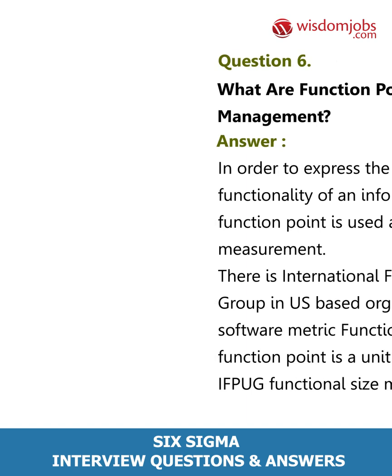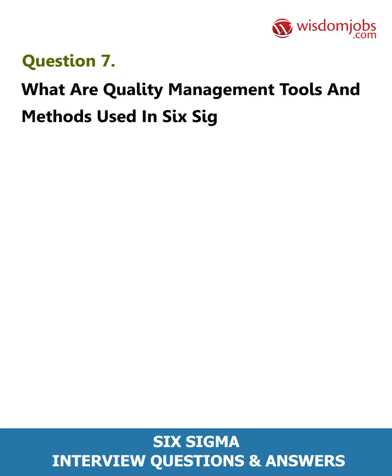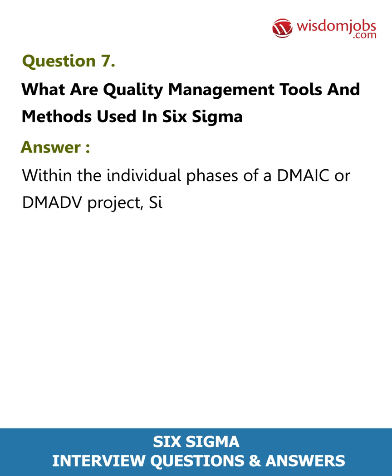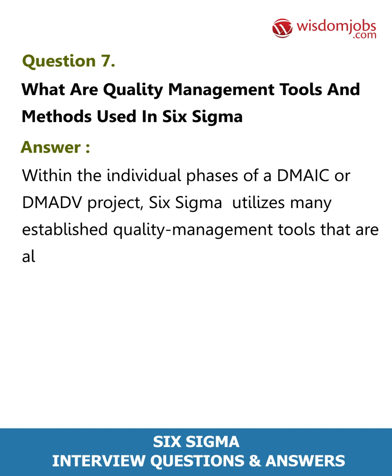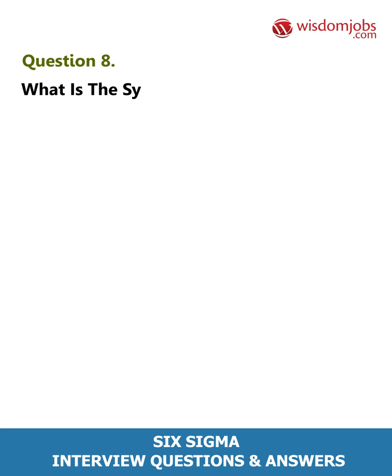Question 7: What are quality management tools and methods used in Six Sigma? Answer: Within the individual phases of a DMAIC or DMADV project, Six Sigma utilizes many established quality management tools that are also used outside of Six Sigma.